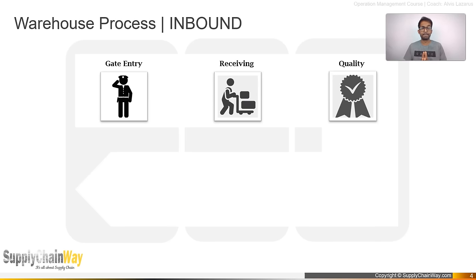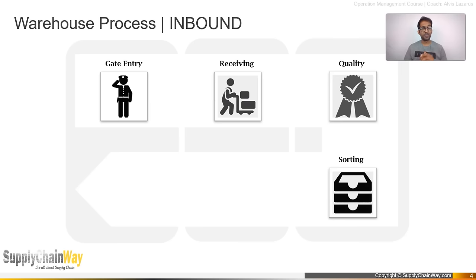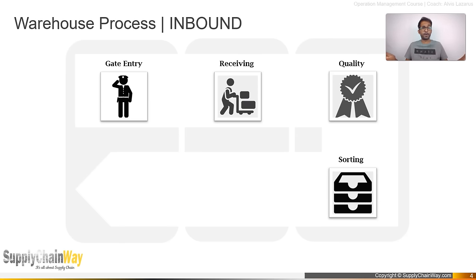After unloading and counting the product, the next activity is sorting. Sometimes sorting and quality checks happen in parallel. In some businesses, a full inspection is completed before sorting. Quality checks can be 100% inspection or sampling. In some cases, there is no quality check at all — claims on the supplier are raised based on field complaints. There are many variations in quality norms.